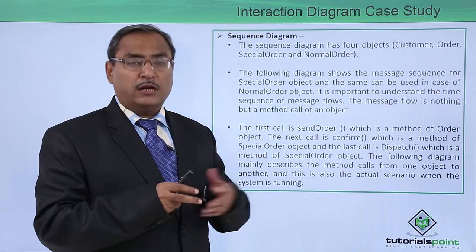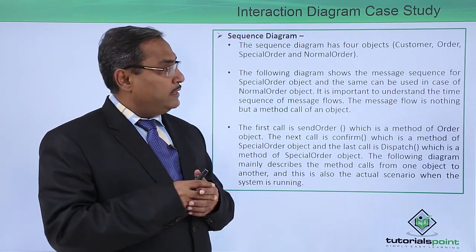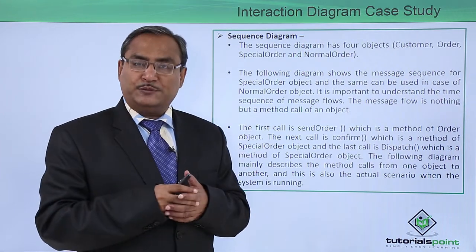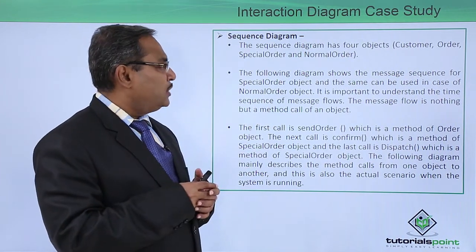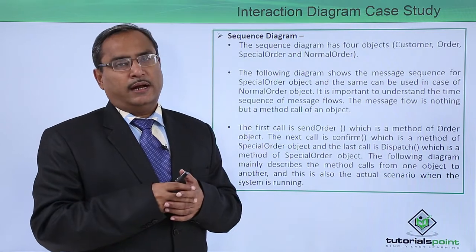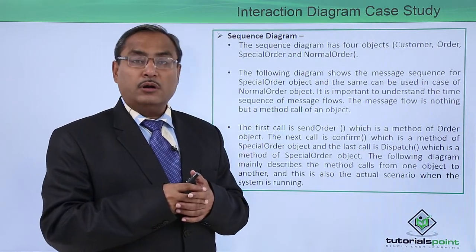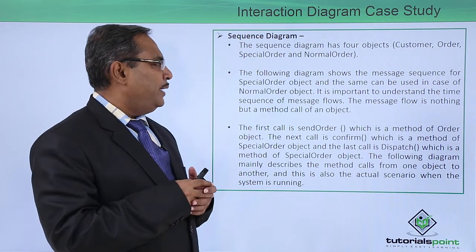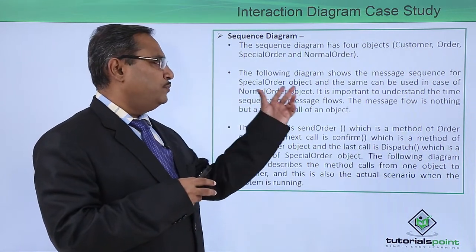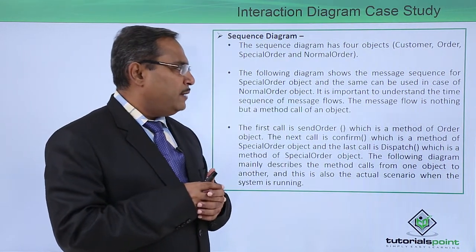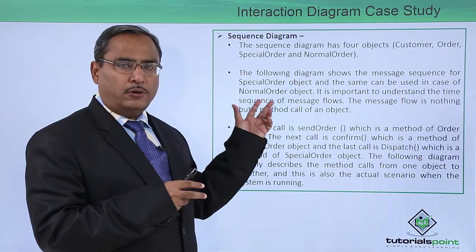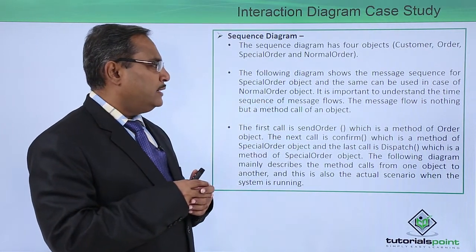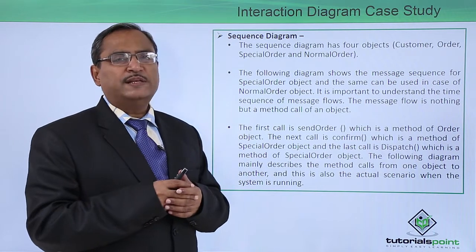If we consider our class diagram video, we discussed there that order is an abstract class, and special order and normal order are concrete classes. The following diagram shows the message sequence for the special order object, and the same can be used in the case of the normal order object also.